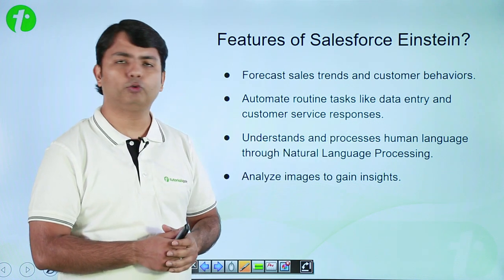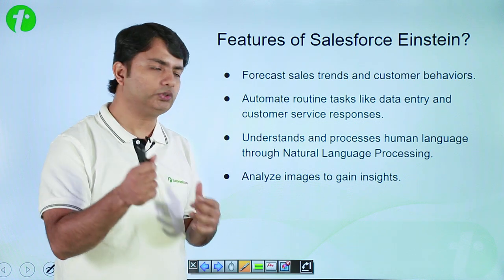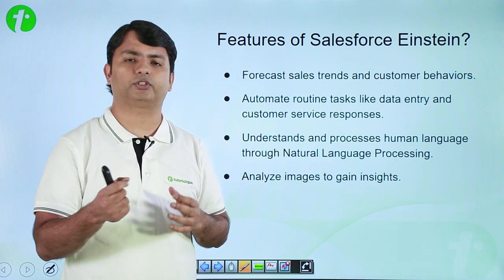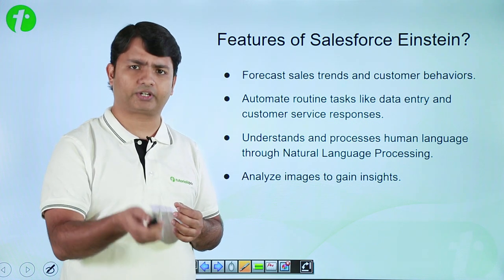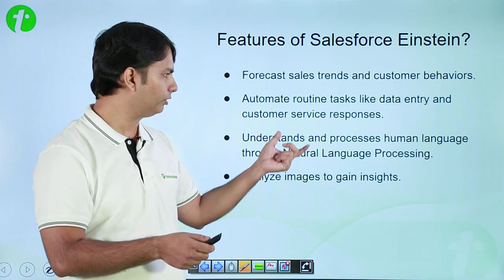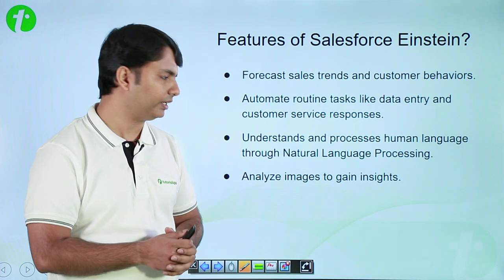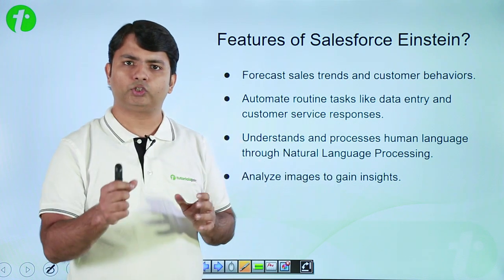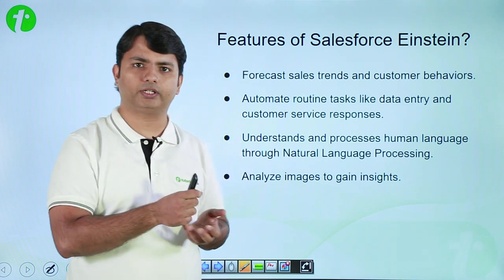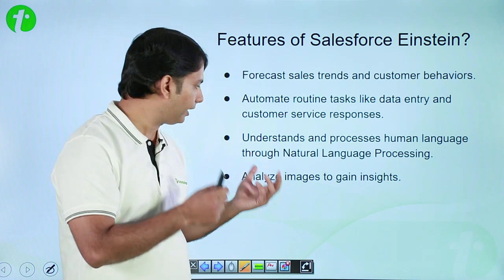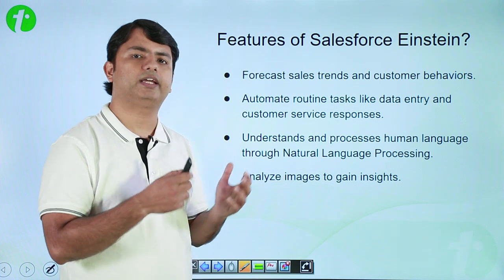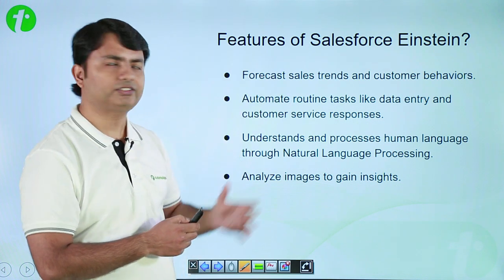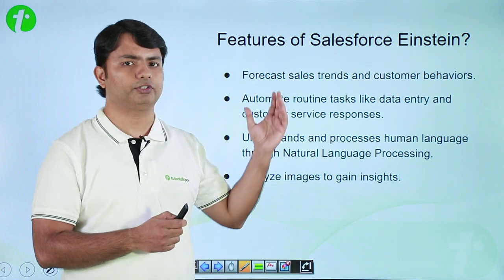Einstein can understand and process human language. You can use this natural language processing feature for customer support — for example, if you want to create chatbots, this feature can help greatly. It can also analyze images to gain insight; you can store product images and it can help identify the exact business need of a particular product. These are some of the important features of Salesforce Einstein.